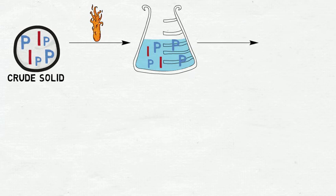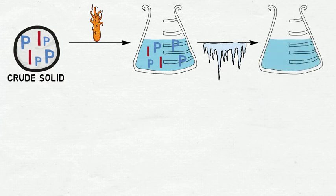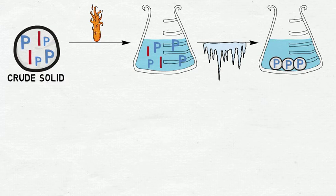Once the solid is dissolved, we let the flask cool down. If the solvent has been chosen correctly based on the impurities and the desired product, the product will precipitate as pure crystals since it has a lower solubility at lower temperatures, giving us an opportunity to separate it while the impurities remain dissolved in the solvent.